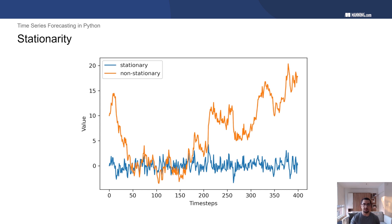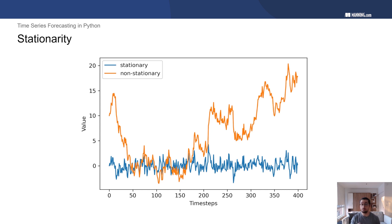We can already see that the orange non-stationary process has some kind of trend — it first decreases and then decreases over time. However, looking at the blue stationary process, there's no real trend — it seems to hover around the same value throughout time. This is just a quick way to get a hint that you may be working with a random walk or not, but of course we will see how to test it statistically.